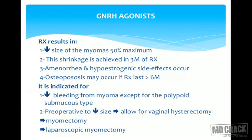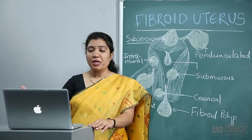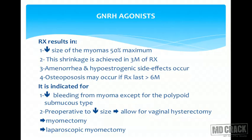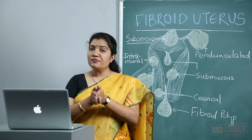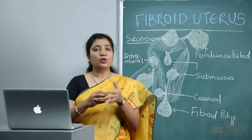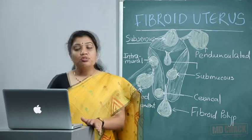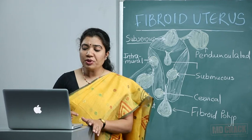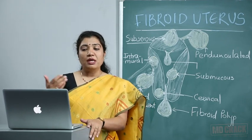GnRH agonists decrease the size of myoma by up to 50% maximum over three months of treatment. Amenorrhea and hypoestrogenic side effects occur, and it may even lead to osteoporosis. GnRH agonists are indicated preoperatively to decrease bleeding and shrink the fibroid to make myomectomy easier, or to allow vaginal hysterectomy in cases where the uterine size would otherwise preclude it, or before laparoscopic myomectomy.